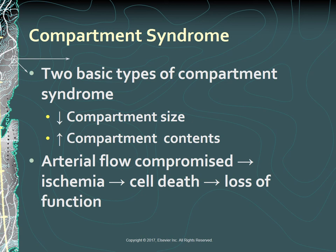Delays in diagnosis and treatment result in irreversible muscle and nerve ischemia, and the extremity may become functionally useless or severely impaired. Compartment syndrome is usually associated with trauma, fractures—especially of the long bones—extensive soft tissue damage, and crush injury. Fractures of the distal humerus and proximal tibia are the most common fractures associated with compartment syndrome.